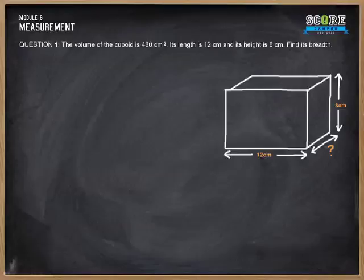Question 1, students. Look at the cuboid, look at the diagram on your right. The volume of this cuboid is 480 cm³. Its length is 12 cm and its height is 8 cm. Find its breadth.